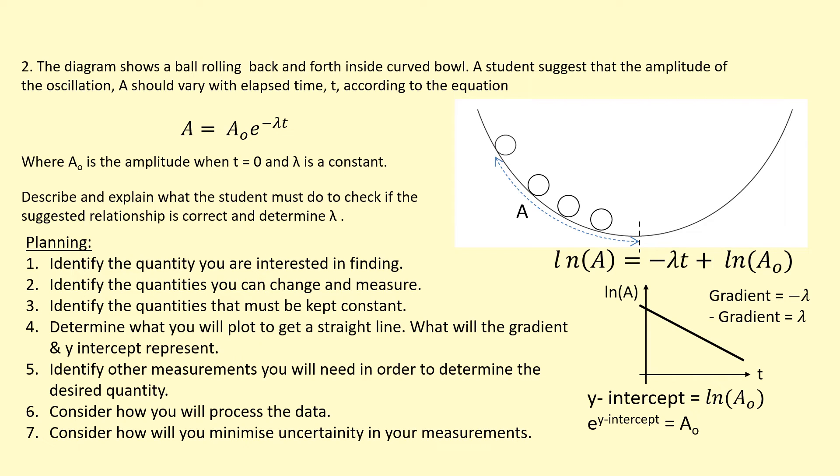How can we minimize uncertainty in our measurements? First, I would use a sufficiently large amplitude. The initial amplitude needs to be large enough that it can be measured with a small percentage uncertainty. As it oscillates back and forth, I would probably use a video camera because the oscillations might be too quick to record what's going on, then take the measurements from there. Finally, I would repeat this experiment more times and take an average.